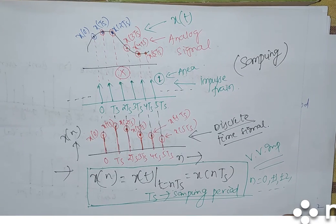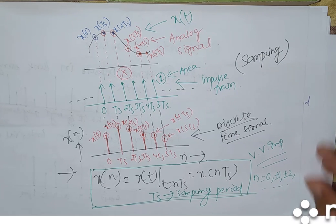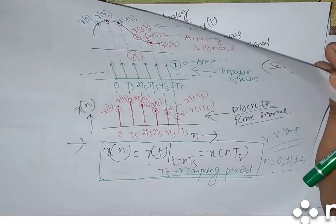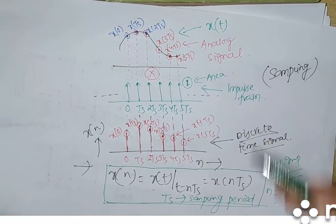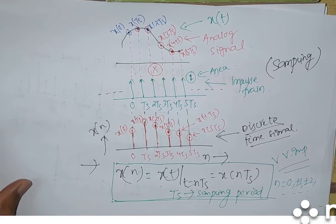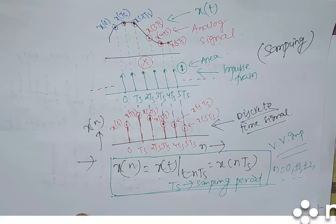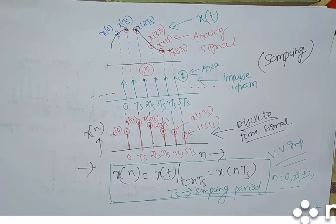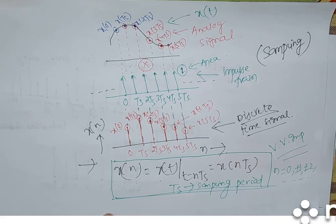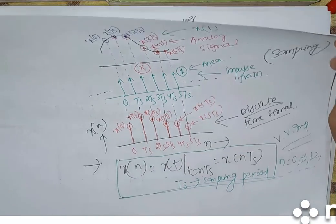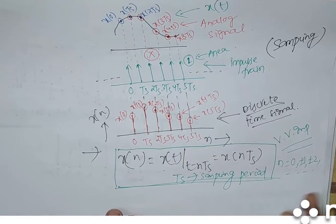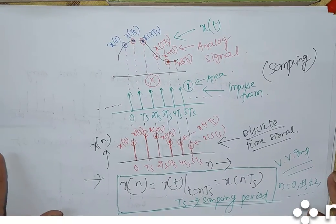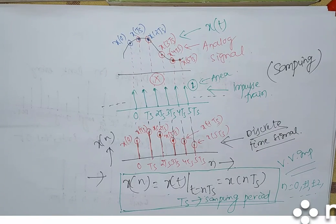I hope you people understand what is analog signal, what is signal, what is analog signal, and what is discrete signal. Also, how you can convert analog signal to discrete signal. For today, thank you. We will see some more topics like digital signal — what is digital signal and how you get digital signal from analog signal — and some more things about digital signal processing. I think up to here it is clear to all people. Thank you so much. We will see you in the next video.